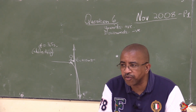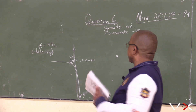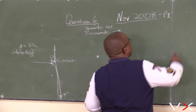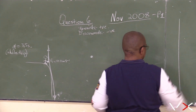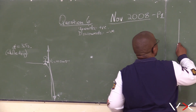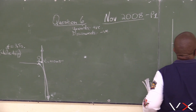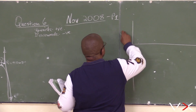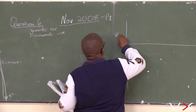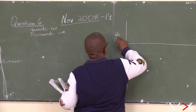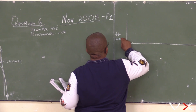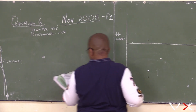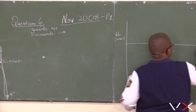Use the information on the graph to answer the following questions. The graph has velocity in meters per second on the vertical axis and time in seconds on the horizontal axis.